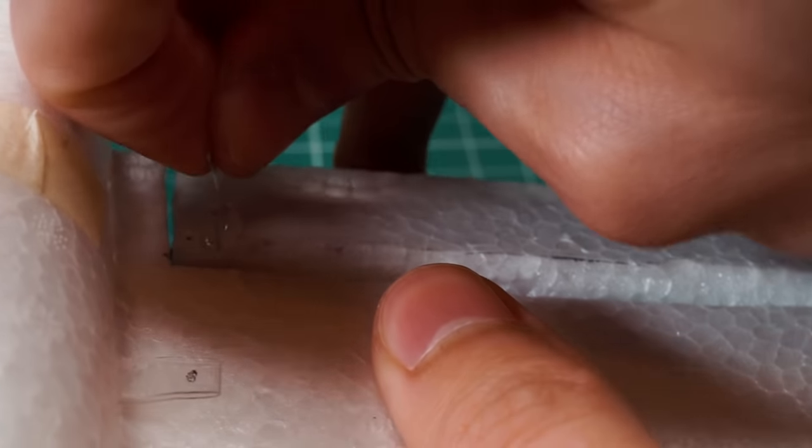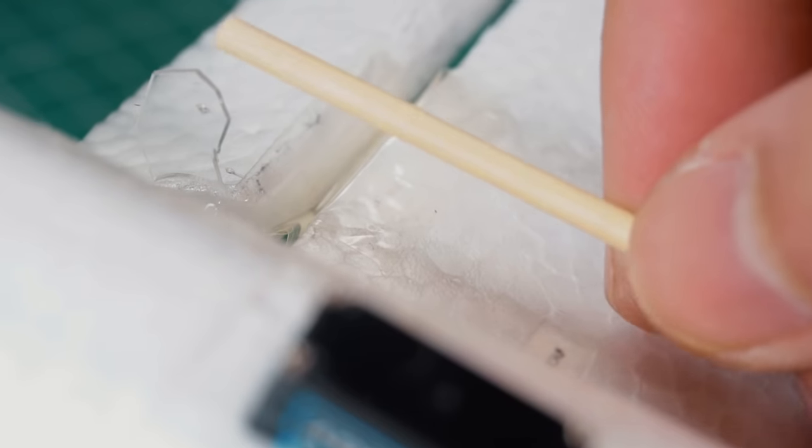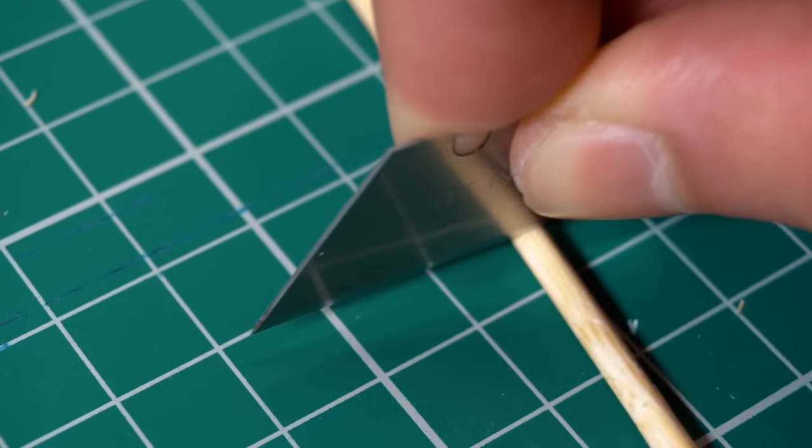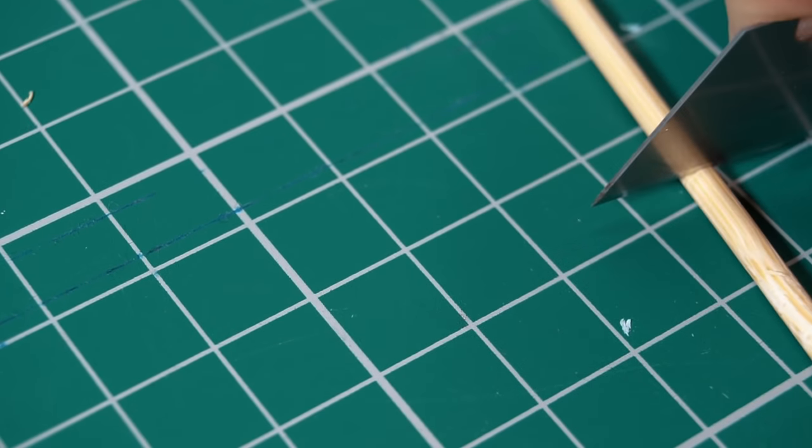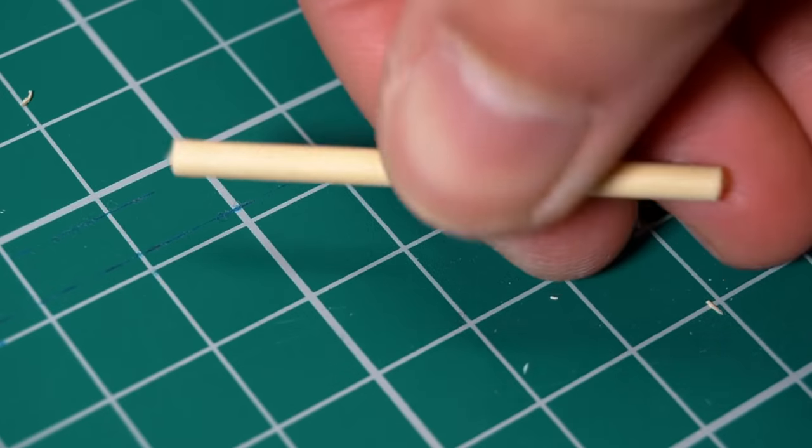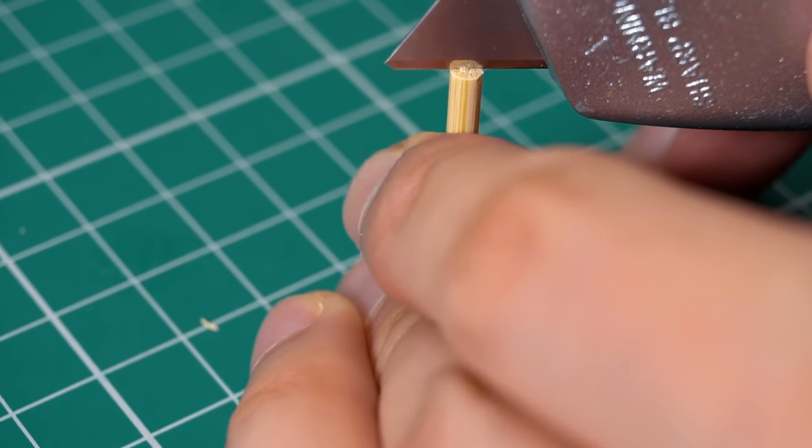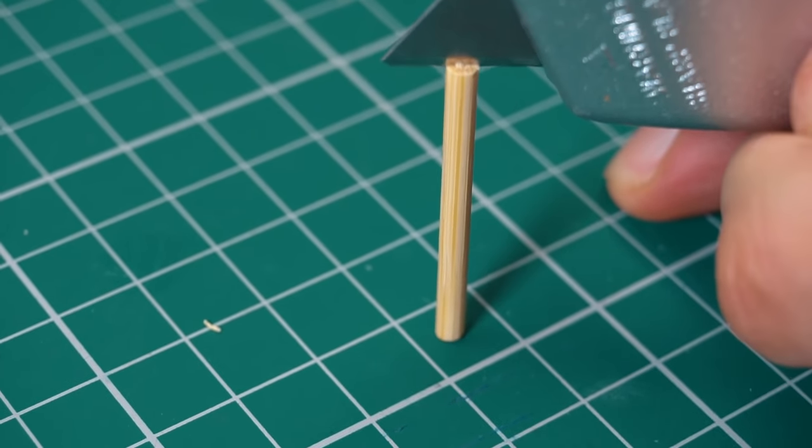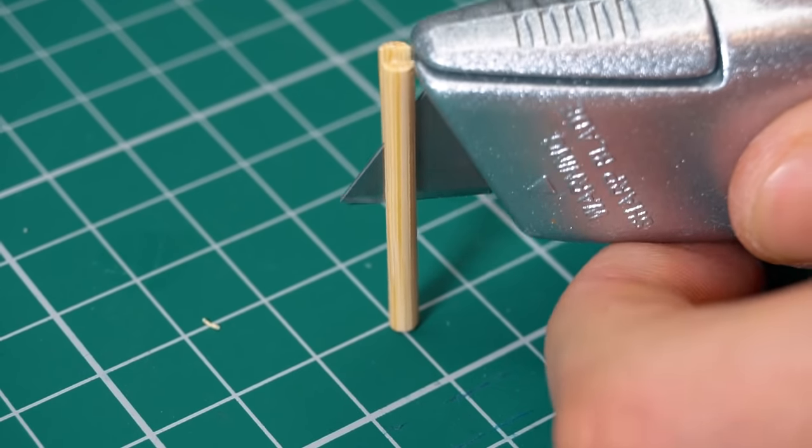Now I need to connect some push rods. The push rods are the ones that connect the servo to the control horns. You can use a guitar metal string but in my case I'm going to use barbecue skewers to make a different kind of push rods because I don't have a long wire to connect the servo to the control horns. Pay attention to these images so you can see how I did this procedure to make these push rods.